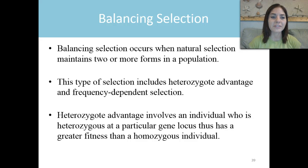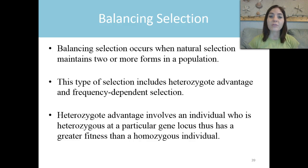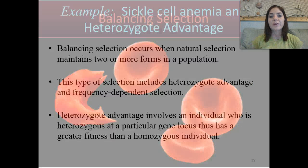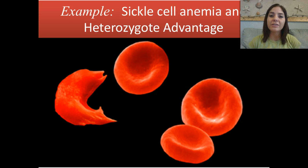So why is heterozygote protection of potentially negative recessive alleles important to species survival? We will soon find out. Next up is balancing selection — a selection that occurs when natural selection maintains two or more forms in a population. This includes the heterozygote advantage and frequency-dependent selection. The heterozygote advantage involves an individual who is heterozygous at a particular gene locus having a greater fitness than a homozygous individual. The most common example of this is sickle cell anemia.